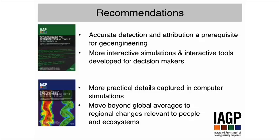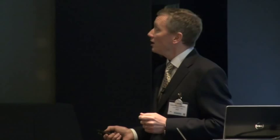In terms of recommendations — I'd encourage you to have a look at our briefing notes which set them out in more detail. But just to emphasise a couple of points: if you ever contemplate deployment of geoengineering, you need to be able to detect and attribute changes in climate with a reasonable degree of accuracy before you deploy. Without that, it's going to be very difficult to make effective decisions and guide the geoengineering. And given the regional variations in results, it's important now that global modelling moves on to much more of a regional focus, and a focus on impacts that are relevant to people and ecosystems.